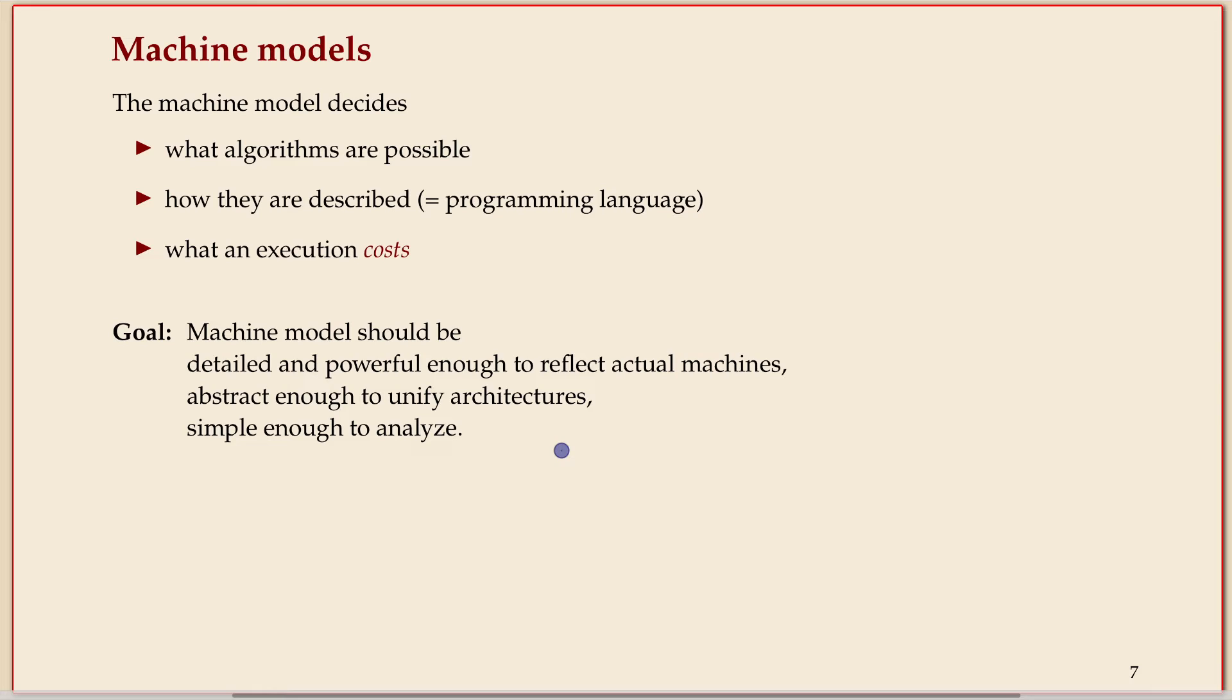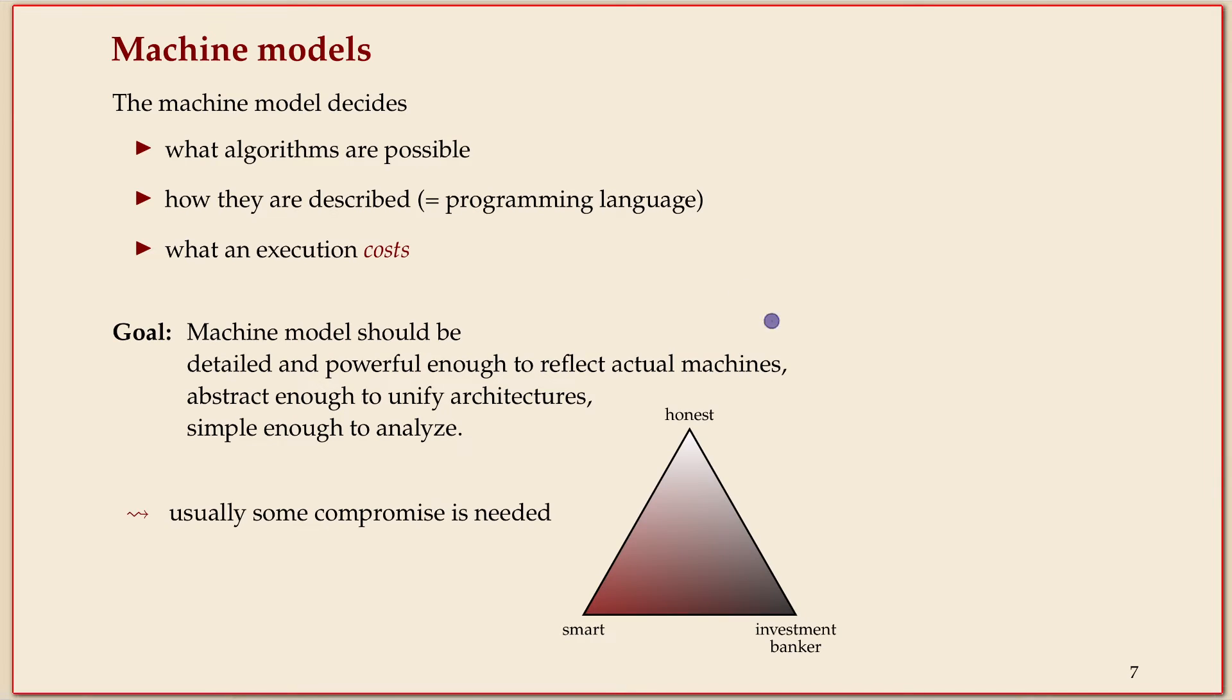We have a bit of conflicting interests here. We want machine models that are as detailed and powerful as our actual machines because we want to be realistic. At the same time, we want to not have one model for each computer in the room; we'd like to unify that if anyhow possible. And then we'd also like to analyze it, which again pushes it to the simple direction. You usually can't have all three; pick any two.